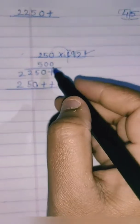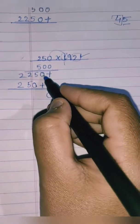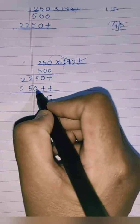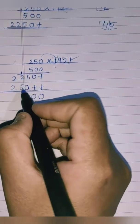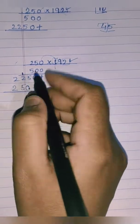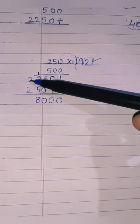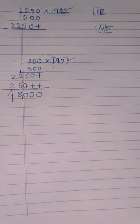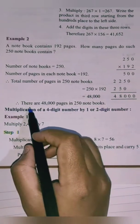Adding all partial products: 0 plus 0 plus 0 is 0; 0 plus 0 is 0; 5 plus 5 is 10 — write 0 and carry 1; 2 plus 5 plus 1 carry is 8; 2 plus 2 is 4. So the answer is 48,000.